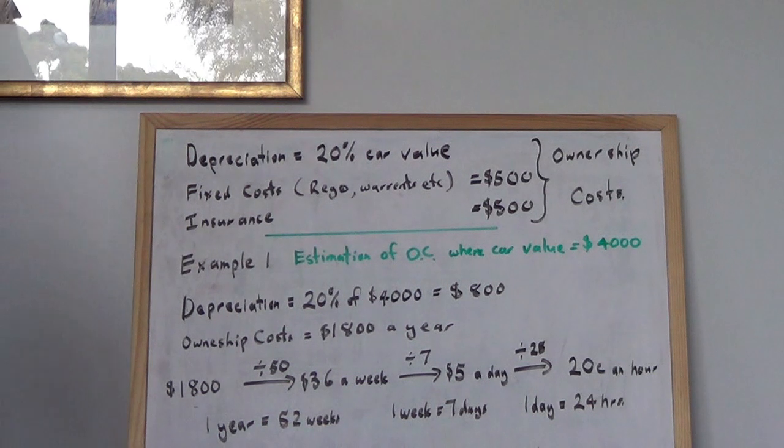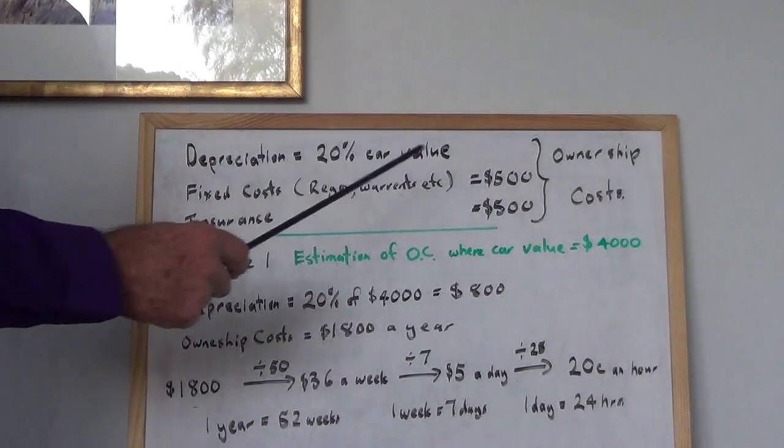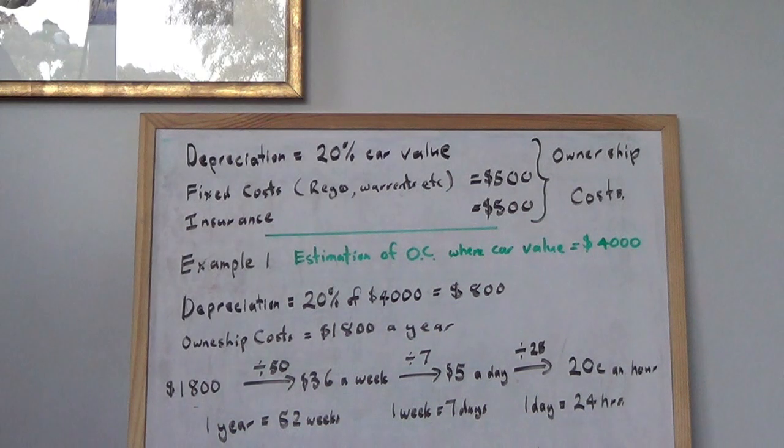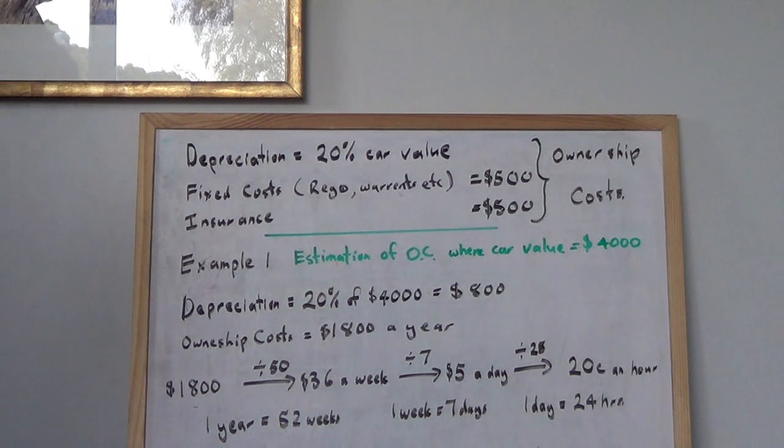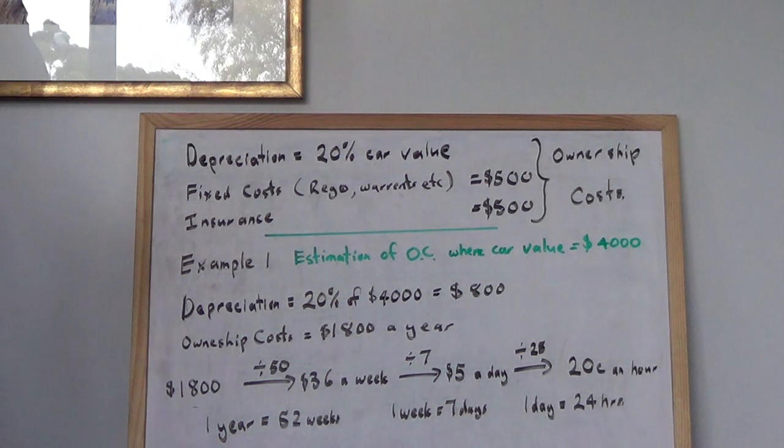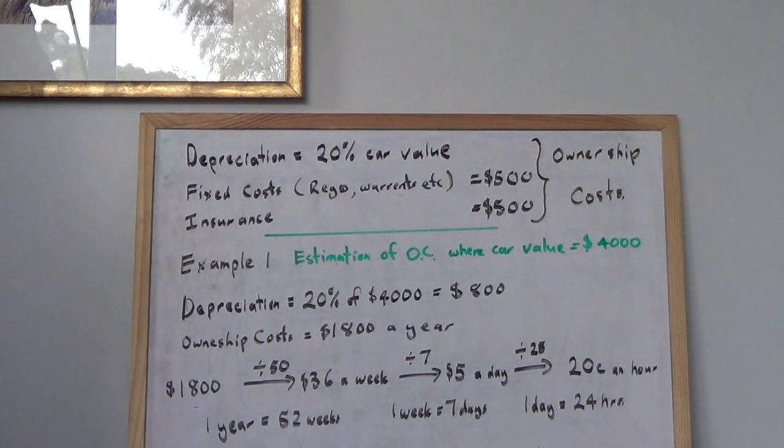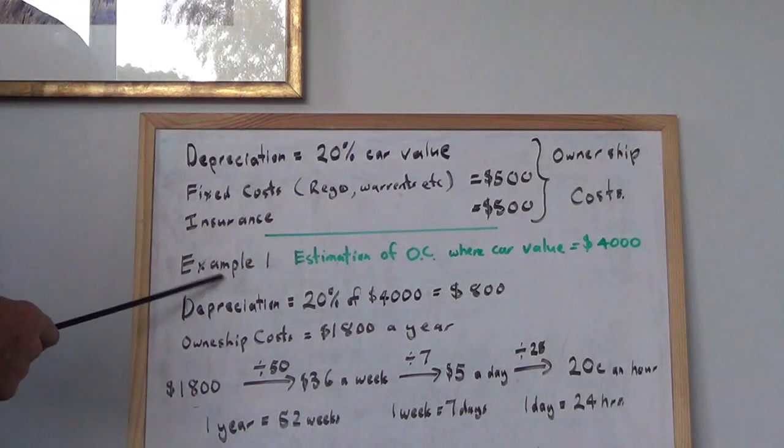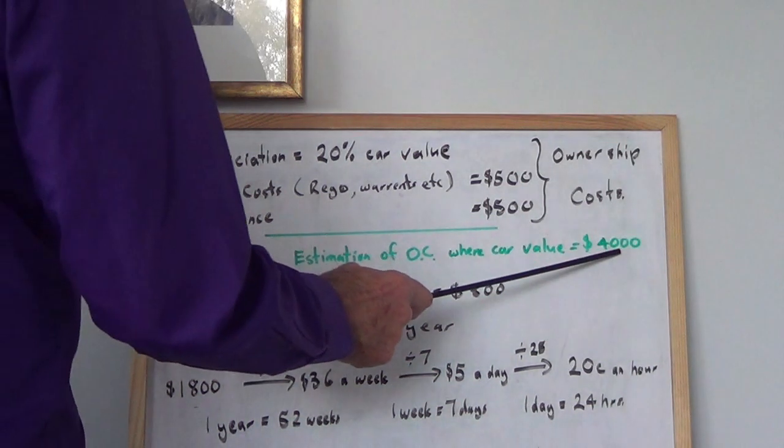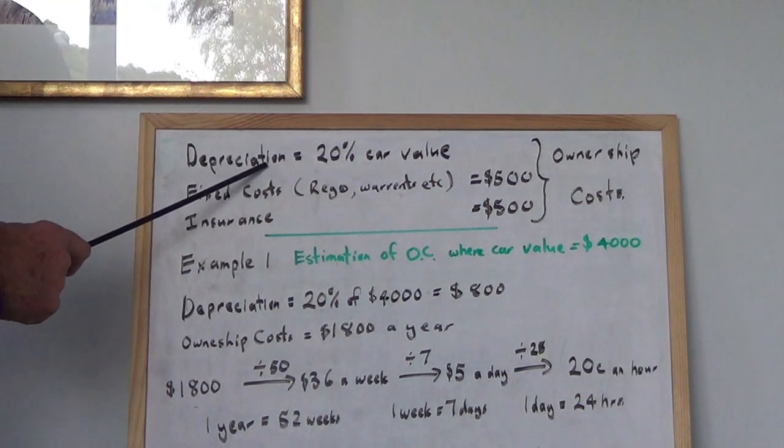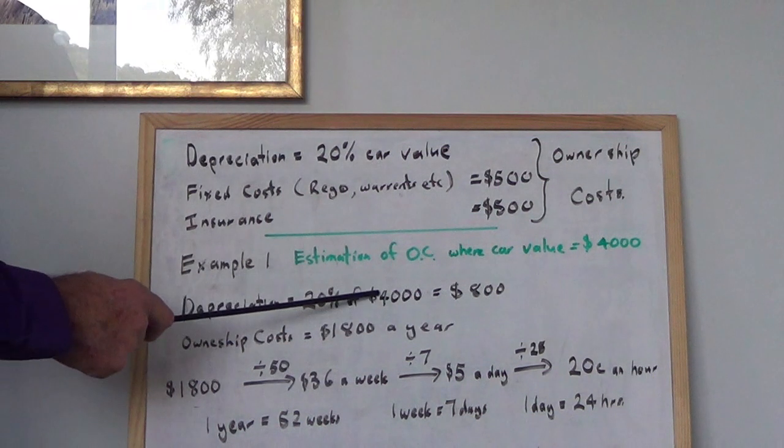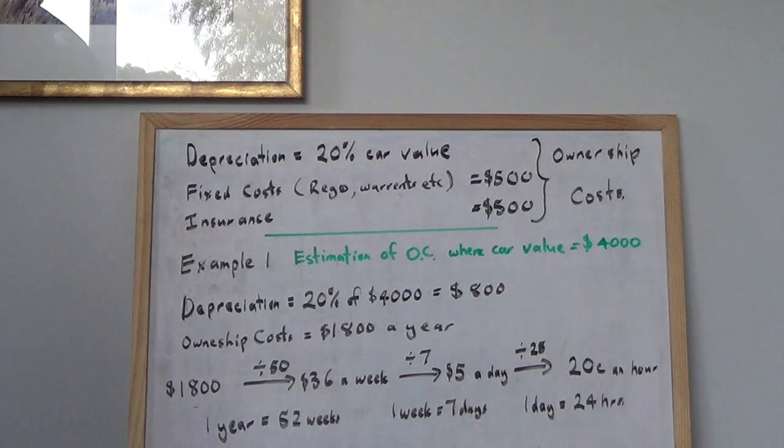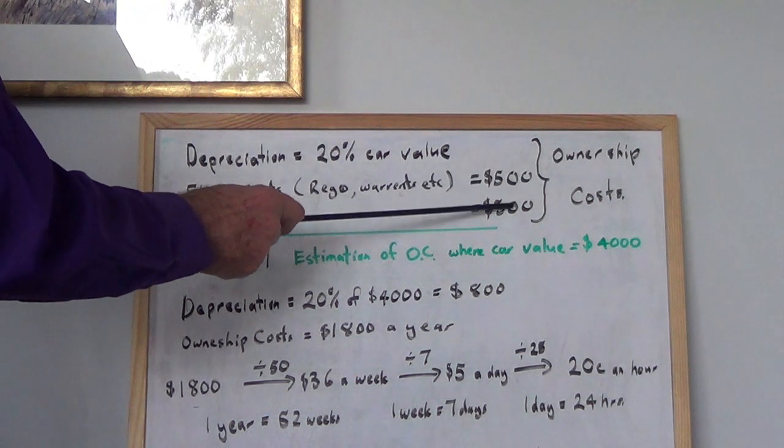Here's an example where I'm going to use the idea of a parking meter. I'm going to take your ownership costs and see how much you need to put into a parking meter each hour to cover your ownership costs. Here's the first example: the car value is $4000. So the first thing you work out is 20% of $4000, so you divide $4000 by 5 which is $800. Then you've got these two here which come out to be $1000, so you've got $1800 a year.